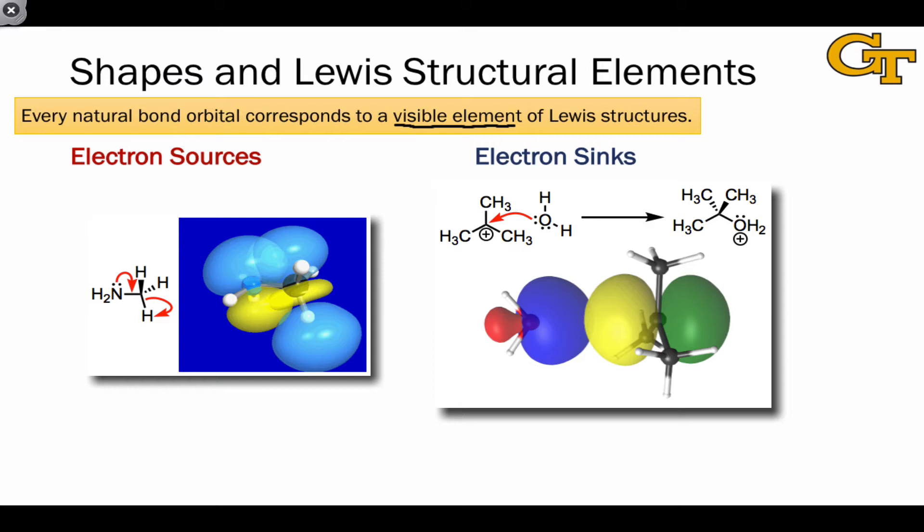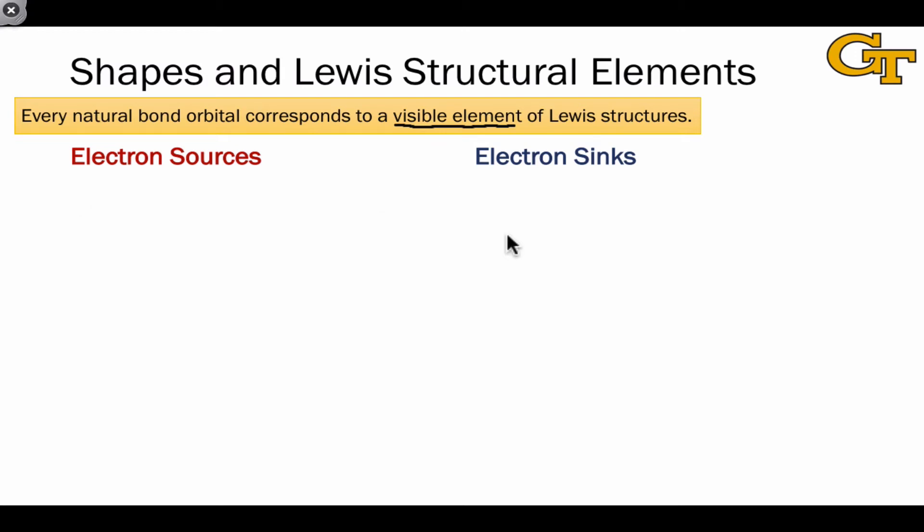In this video, we're going to survey the natural bond orbitals and see how they relate to specific elements within Lewis structures. Let's start with the electron sources. The first is the non-bonding lone pair.